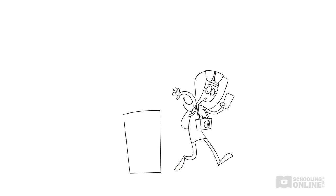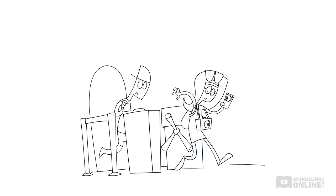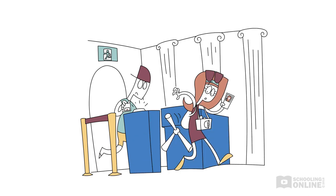To enter the City Council Centre, Sally needs to swipe her student card on a scanner and pass a security barrier. These security measures control the movement of visitors to and from the City Council Centre. Those two security measures — the card swiper and barriers — are similar to the nuclear membrane, which consists of two membranes that control the movement of substances to and from the nucleus.